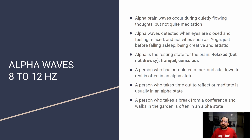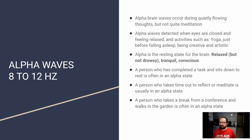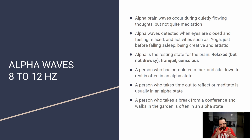Alpha is the next area and it's a little bit more active — the resting state of the brain. Relaxed is a key word here: not drowsy or sleepy, but relaxed, present, and conscious — not quite meditation, but relaxed enough so that you are not concentrated on anything, yet awake and present. A person who has just completed a task and sits down to rest and reflect is in alpha state. If you meditate actively, take a break from a conference and walk in the garden, or do yoga, all of these activities are associated with activating alpha areas.